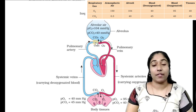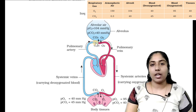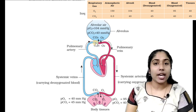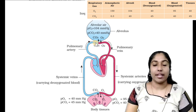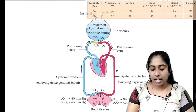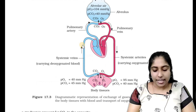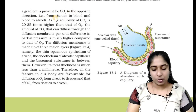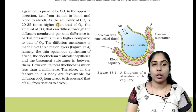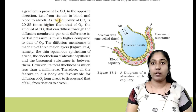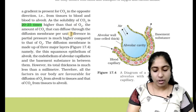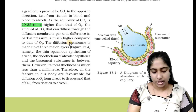In the oxygenated blood, carbon dioxide is 45 mmHg and the alveolus has 40 mmHg. The oxygenated blood goes to the atmosphere through the alveolus — this is the expiration process. Similarly, a gradient is present for carbon dioxide in the opposite direction, that is from tissues to the blood and blood to the alveolus. The movement is based on the concentration gradient or pressure gradient. The solubility of carbon dioxide is 20 to 25 times higher than that of oxygen, so the amount of carbon dioxide that can diffuse through the diffusion membrane per unit difference in partial pressure is much higher than that of oxygen.